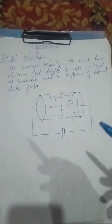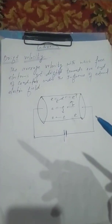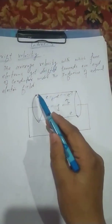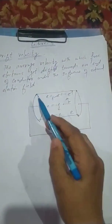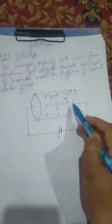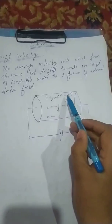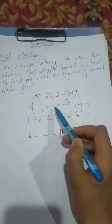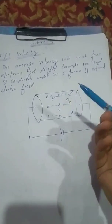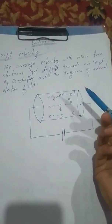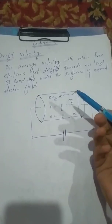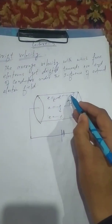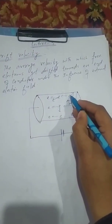In this lecture we will try to learn about the concept of drift velocity. Suppose we simply have a cylindrical conductor. In this conductor there are a very large number of free electrons, and as a result of thermal agitation due to room temperature, these electrons are moving randomly in different directions.